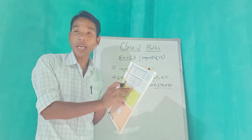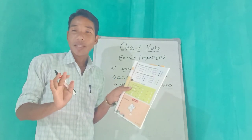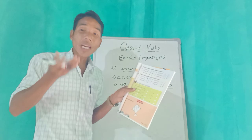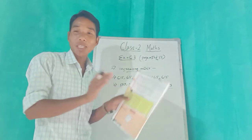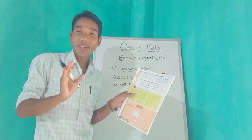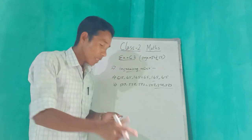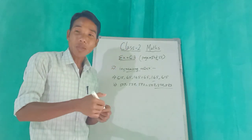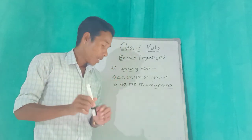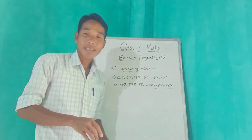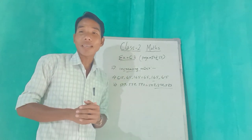Do numbers C to F in your book by yourself at home. Can you do it? Yes — because it is very easy. You know the rest, so try to do it by yourself at home. Okay class, see you in the next class. Thank you!